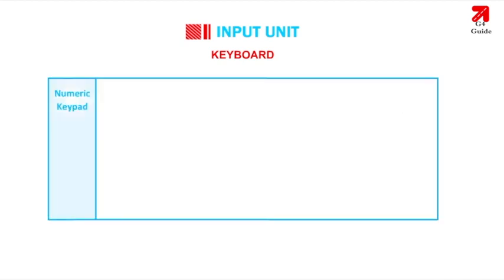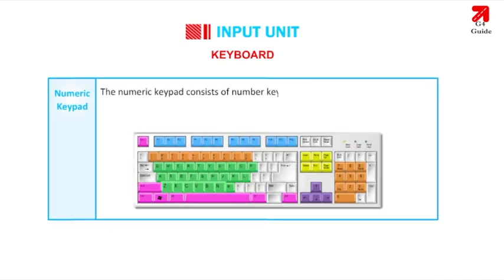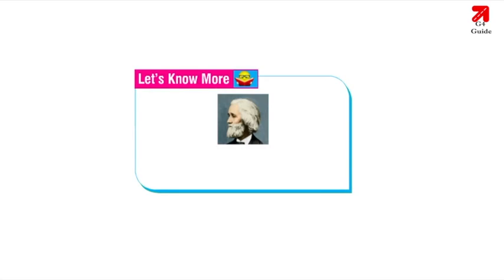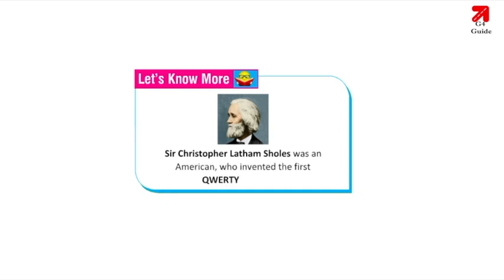Numeric Keypad: The numeric keypad consists of number keys from 0 to 9, the arithmetic operators and the decimal point. It is placed on the right side of the keyboard and is used for entering numbers at a faster pace. Sir Christopher Latham Schultz was an American who invented the first keyboard.